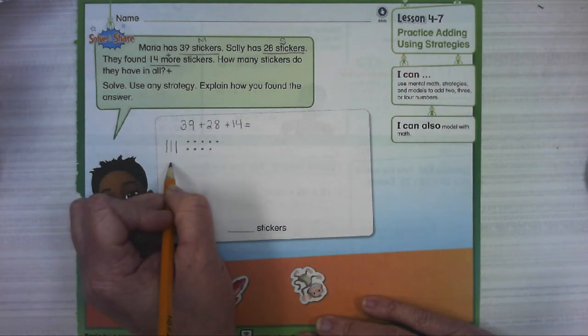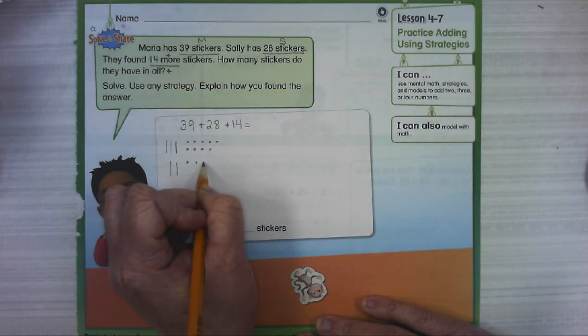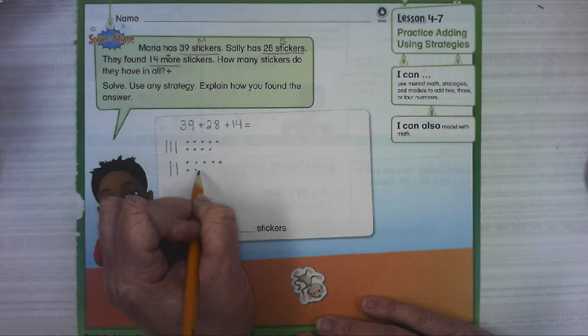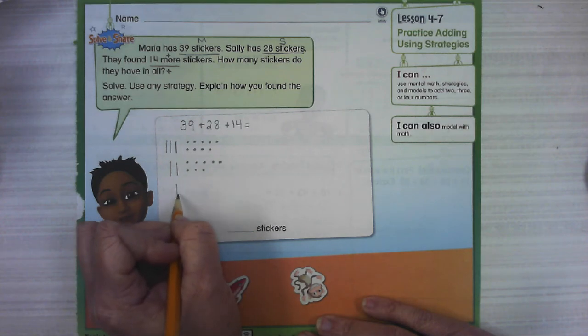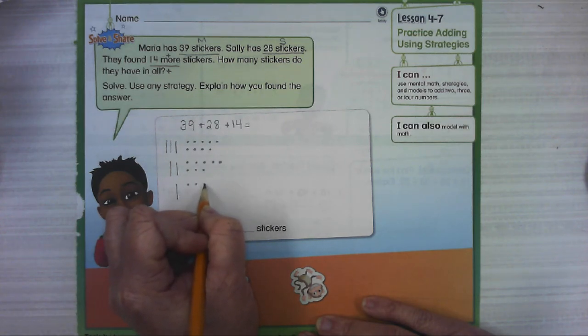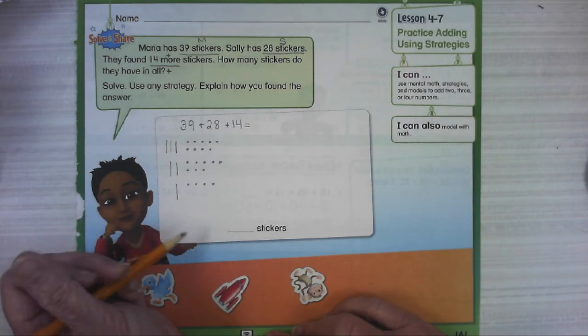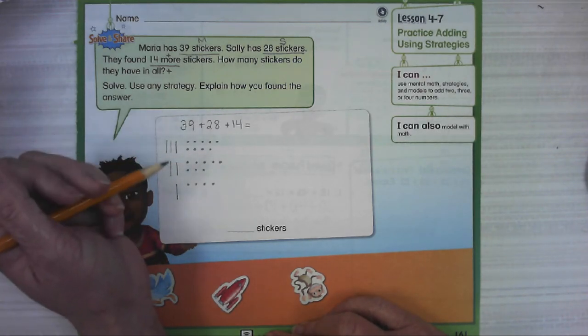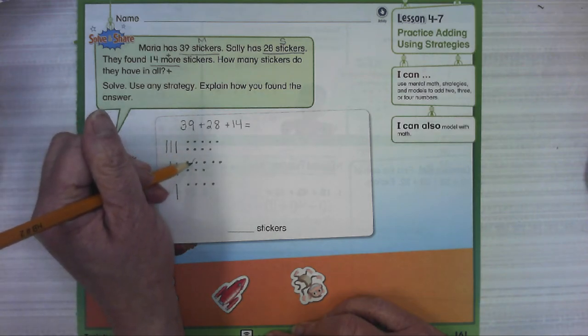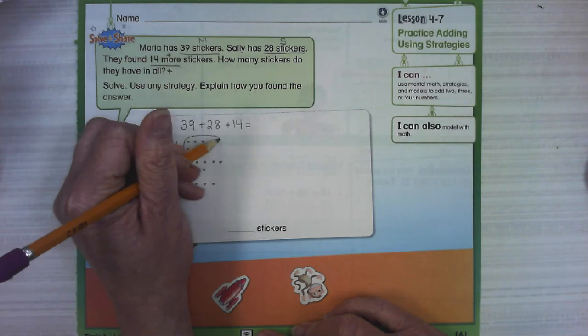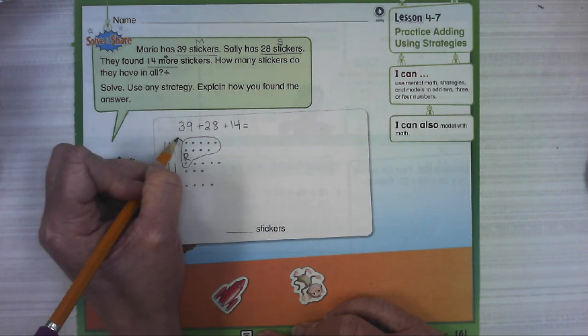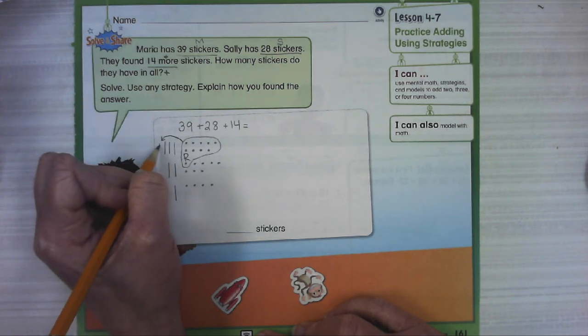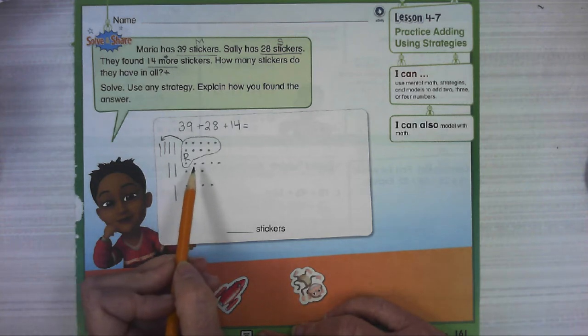I'm going to start by drawing base 10 blocks. So I'm going to model 39, three tens, nine ones. I'm going to draw 28 with two tens and eight ones, with plenty of room so I can circle things and space them out. And then 14. I'm going to start in the ones place. I see I've got nine here. Nine only needs one more to make a ten. So I'm going to come scoop this one up. I'm going to put these in a group of ten.